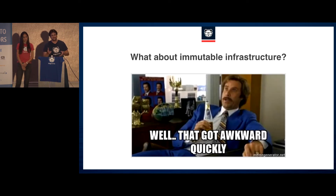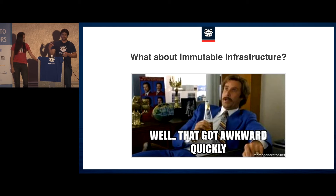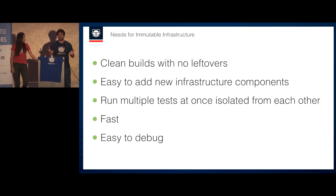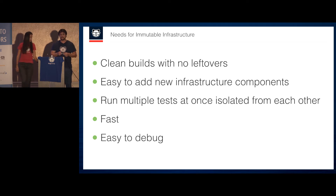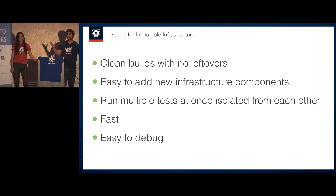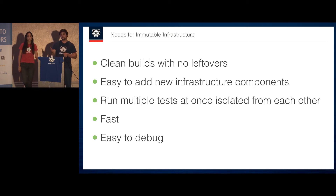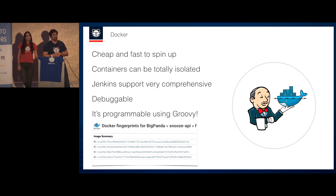So all of this is very nice, but the topic was immutable infrastructure and we haven't talked about that at all. We still have the same needs: clean builds with absolutely no leftovers, easy to add new infrastructure versions, easy to run multiple test steps simultaneously without interference, completely isolated, fast, and easy for developers to debug without SSHing to Jenkins slaves. So we looked for solutions, and like all the cool kids, we started using Docker.